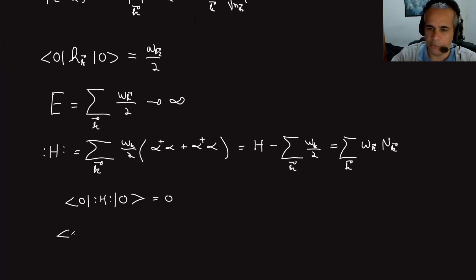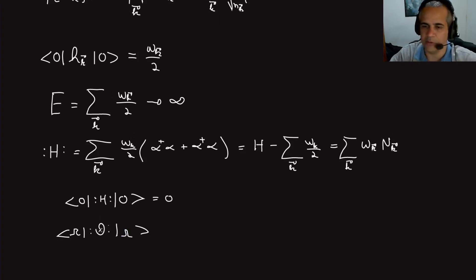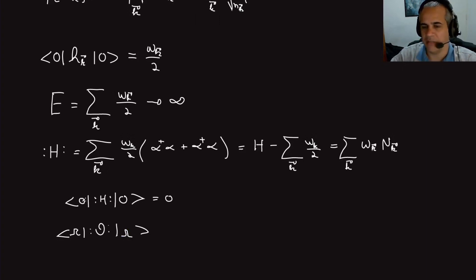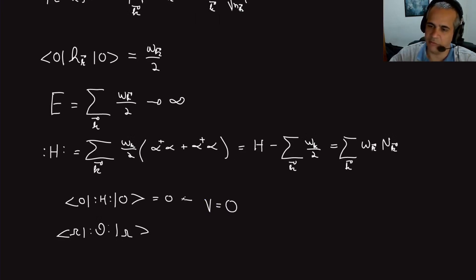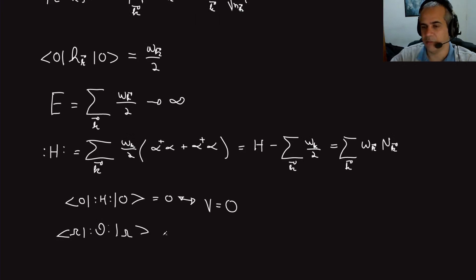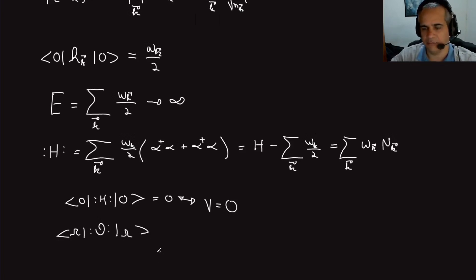For more general operators and vacua, we always use normal-ordered operators to avoid these infinities. For the free scalar field (V=0) we call the vacuum |0⟩, while for theories with a potential giving interactions, we call the vacuum |Ω⟩ — it is simply the lowest-lying state, the state of no excitations.